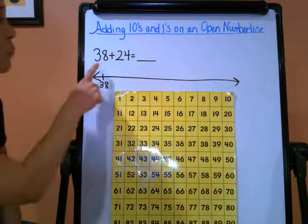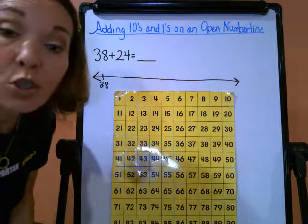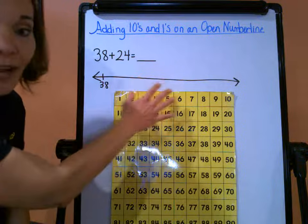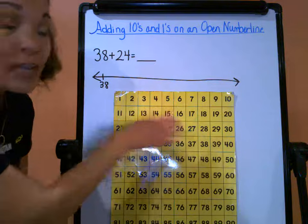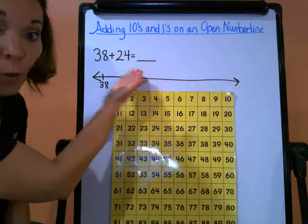As you can see here, I have my problem: 38 plus 24, so you can see that they are two two-digit numbers. I want to use this open number line as a visual, as a guide, in order to help me add on this 24 to my 38.